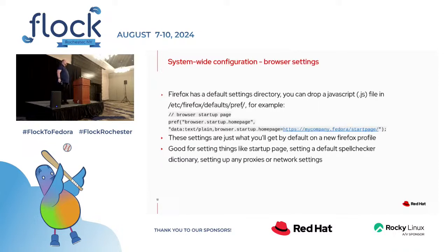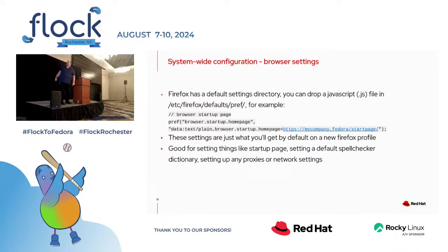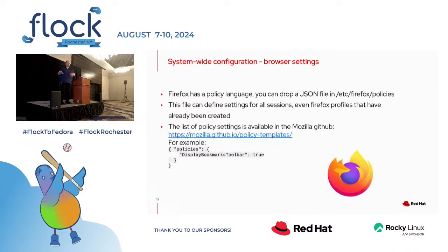Firefox — you can do a lot of site-wide configurations for Firefox. It has a directory that you can drop JavaScript files into. You can set things like the default homepage, default spell checkers, proxies, and network settings. Separate from the default preferences, there's also a policy language — which is JSON — and it lets you do things like set default settings in Firefox, which is different somehow than the default preferences.